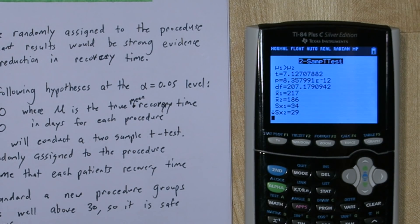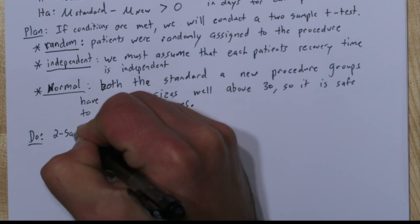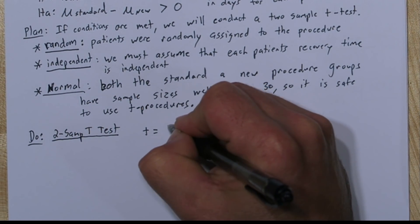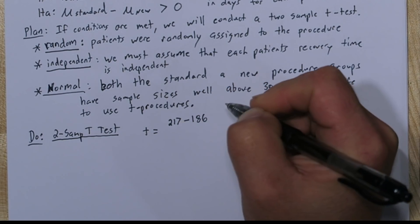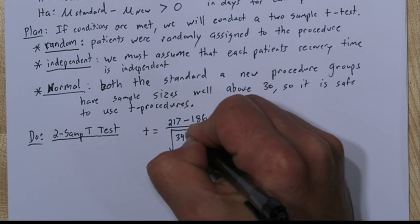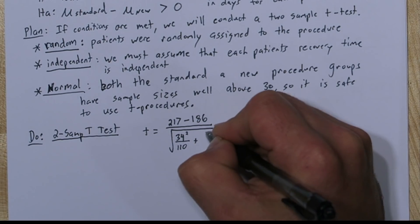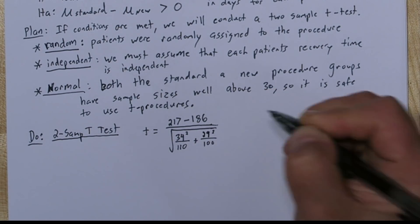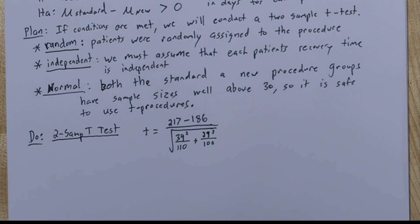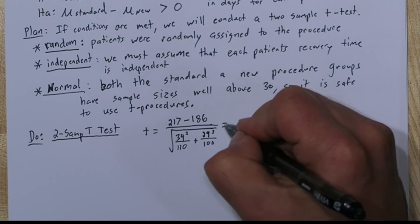All right, so there's the p-value in more detail and our test statistic. Our degrees of freedom, 207. So really we have to decide what we're going to write here. So I'm going to write the formula for calculating t and substitute the values in, but I'm not actually going to calculate this. I'm just going to trust what the calculator came up with here. So this equals about 7.127, and our p-value is approximately equal to 0.